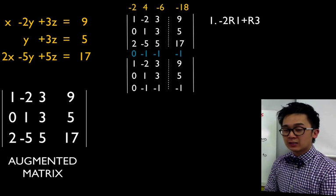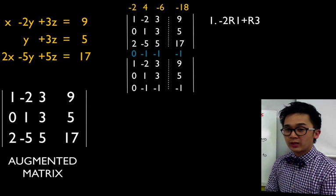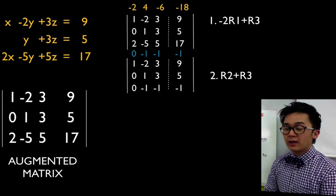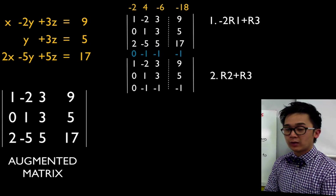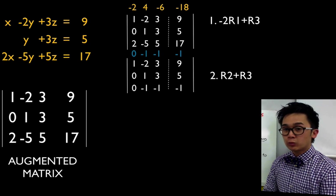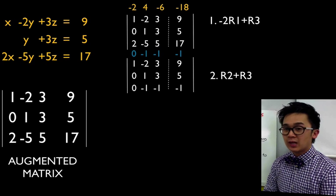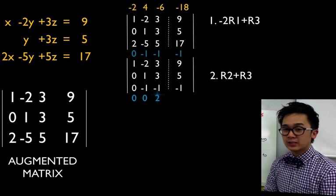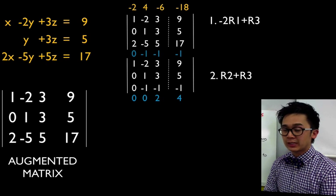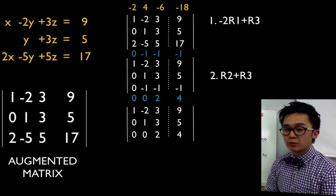The next step is to add row 2 and row 3 to update row 3. Adding the rows: 0+0=0, 1+(-1)=0, 3+(-1)=2, and 5+(-1)=4. Row 2 remains unchanged. Our new matrix is now: row 1: 1, -2, 3, 9; row 2: 0, 1, 3, 5; row 3: 0, 0, 2, 4.